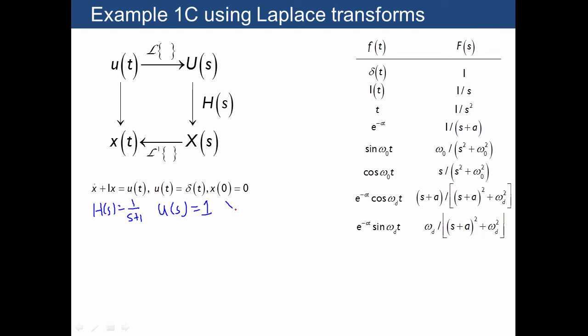And so what we end up with is x of s is equal to h of s times u of s, which is just 1. So we end up immediately being able to find that in the table. So this tells us that x of t is equal to 1 times e to the negative t for t greater than or equal to 0. So the impulse response is actually remarkably easy when you're using Laplace transforms because the impulse response is just the inverse Laplace transform of the transfer function. So if you take the inverse Laplace transform of the transfer function, that is going to give you the impulse response for the system.